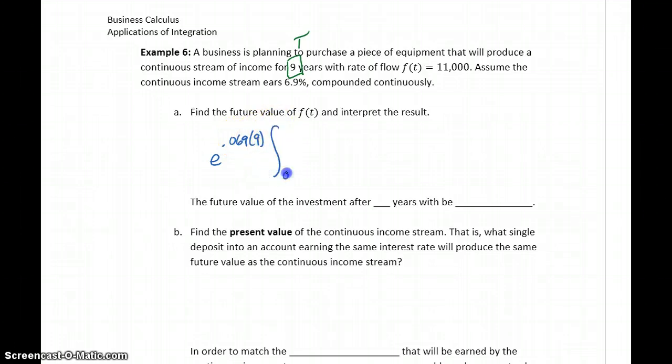Which is in this case 11,000, times e to the r, negative r, so negative 0.069, times lowercase t, dt.